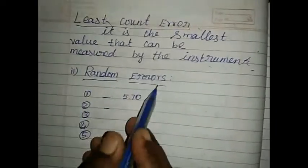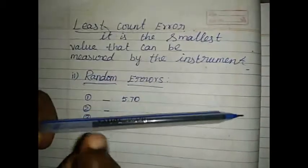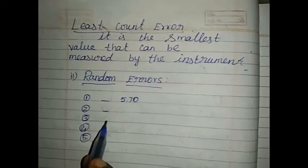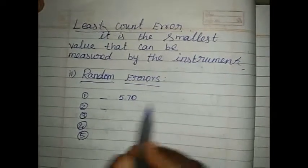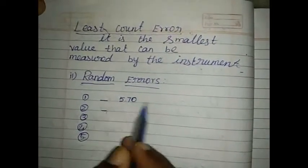Random Errors: If I want to measure the thickness of this pen using screw gauge, when I take the readings, there will be small variation. In the first trial, the value will be 5.70.